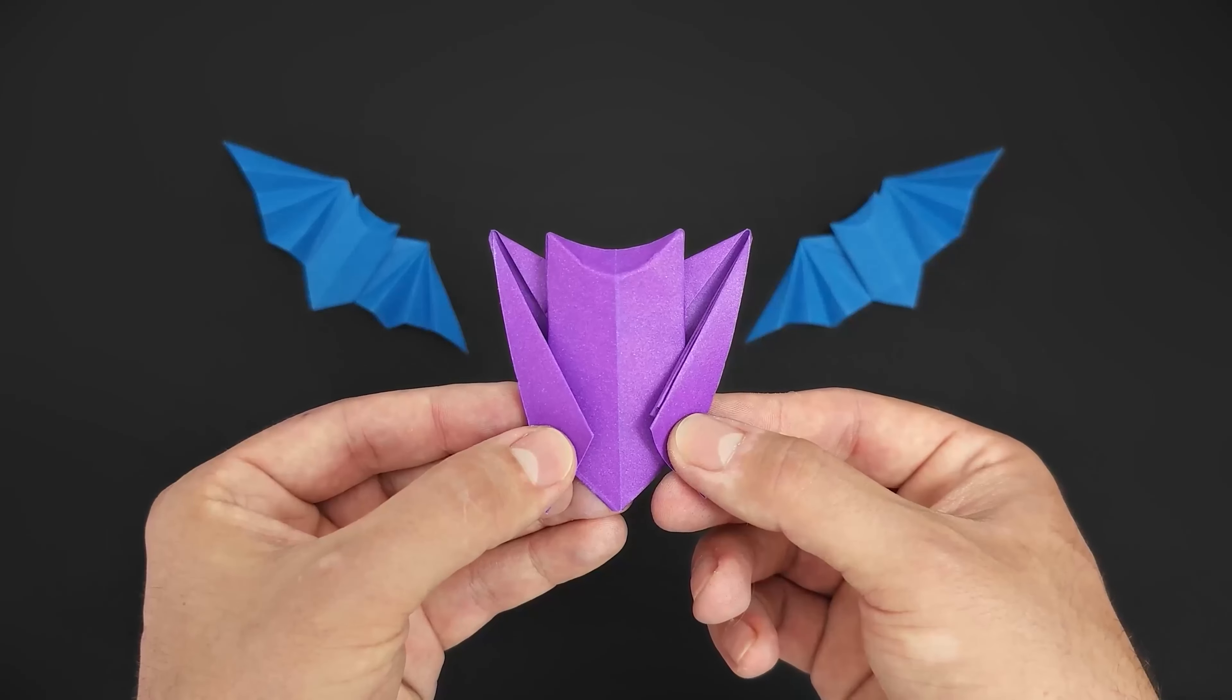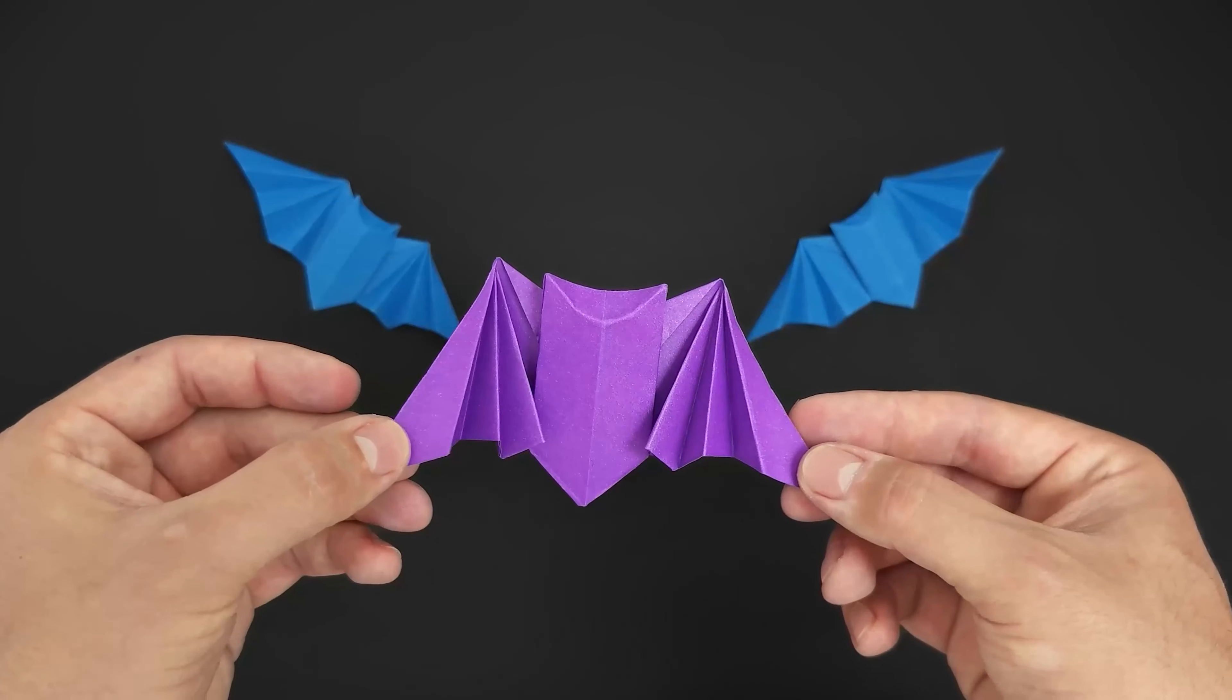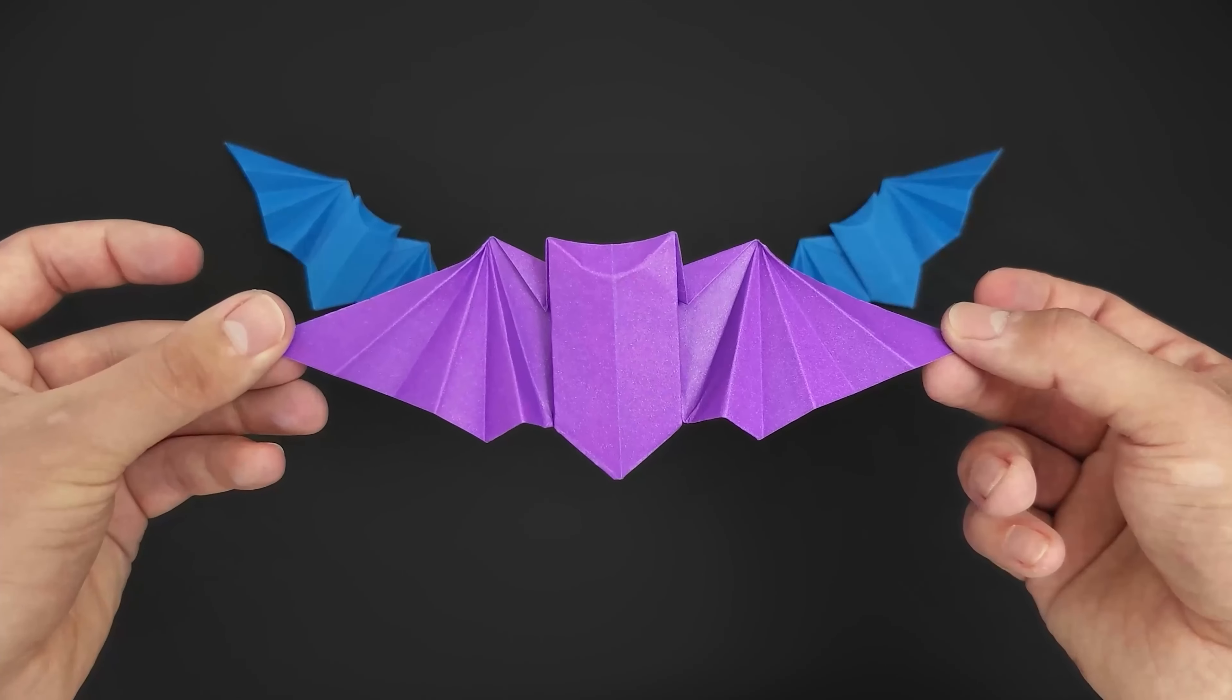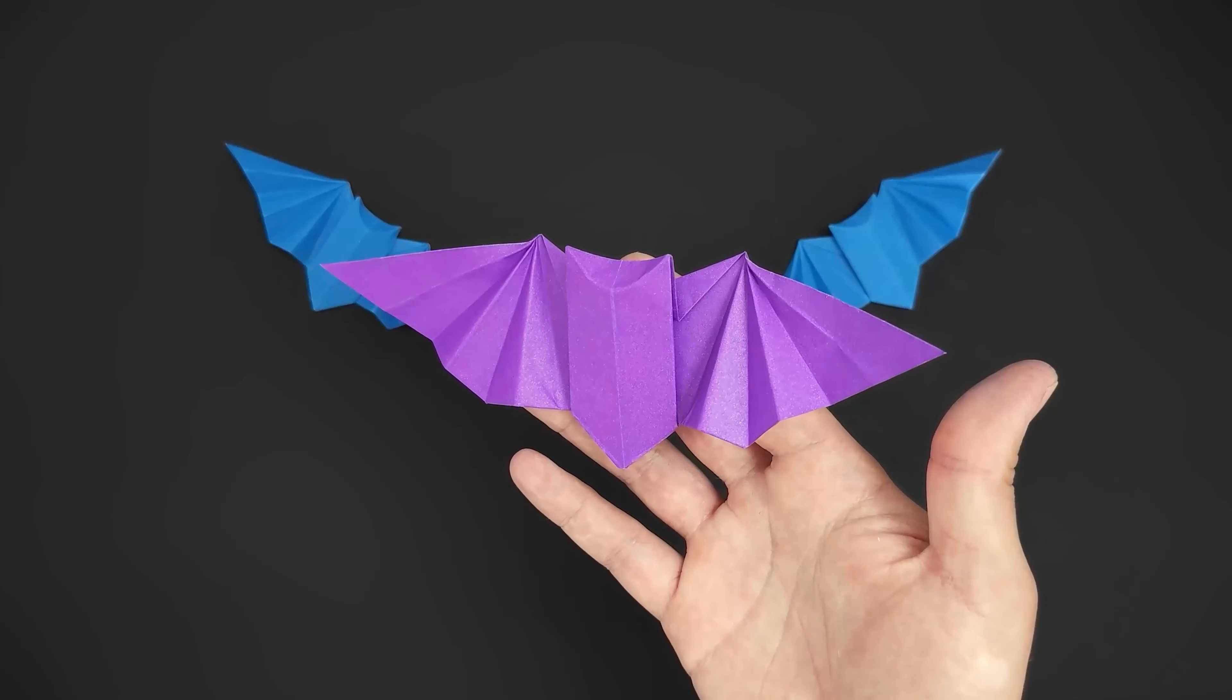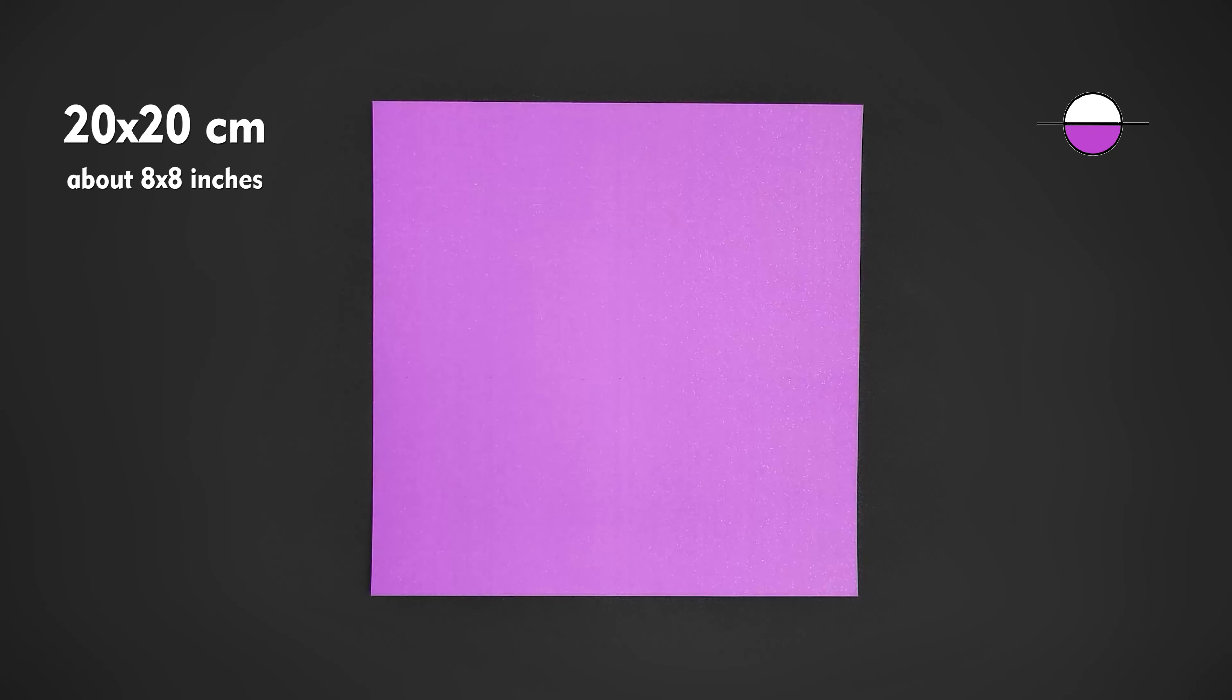Hey everybody, what's up? In this video I'll show you how to fold an origami bat. This is a relatively easy model with a very nice result. The only material you need is a square of paper of the size you prefer. I'll be using 20x20 cm, about 8x8 inches.